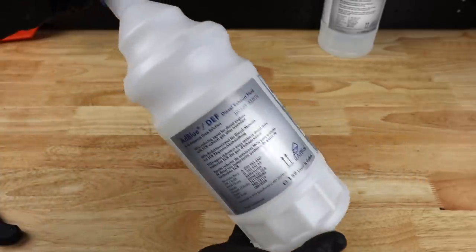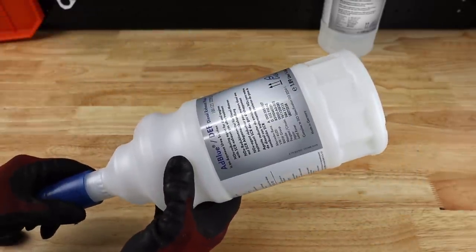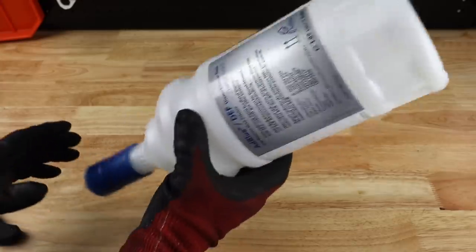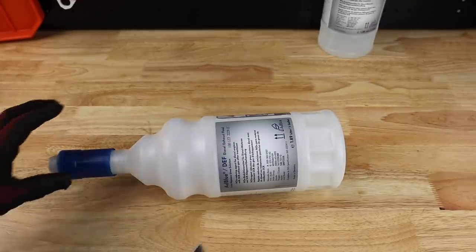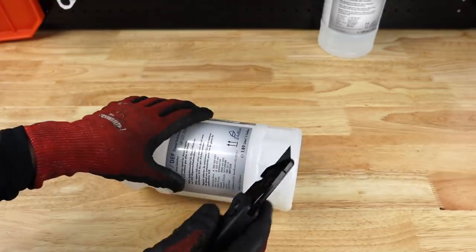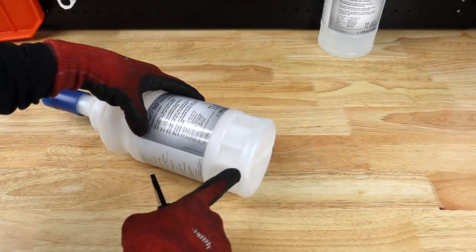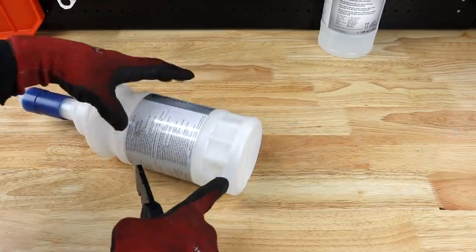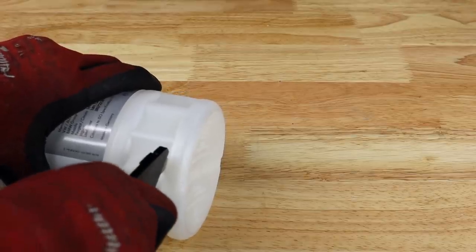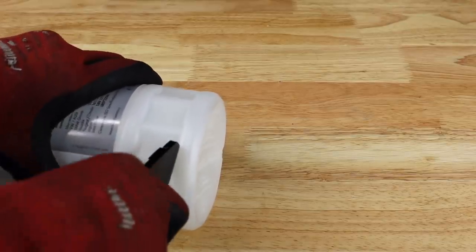First step, we got to use all of the AdBlue that was in the container. So go ahead and fill up your AdBlue tank in your vehicle and make sure this is totally empty. Next what we'll do is we'll take a very sharp razor knife and we're just going to cut along the bottom of the plastic container. So we'll plunge our knife in and just work our way around.